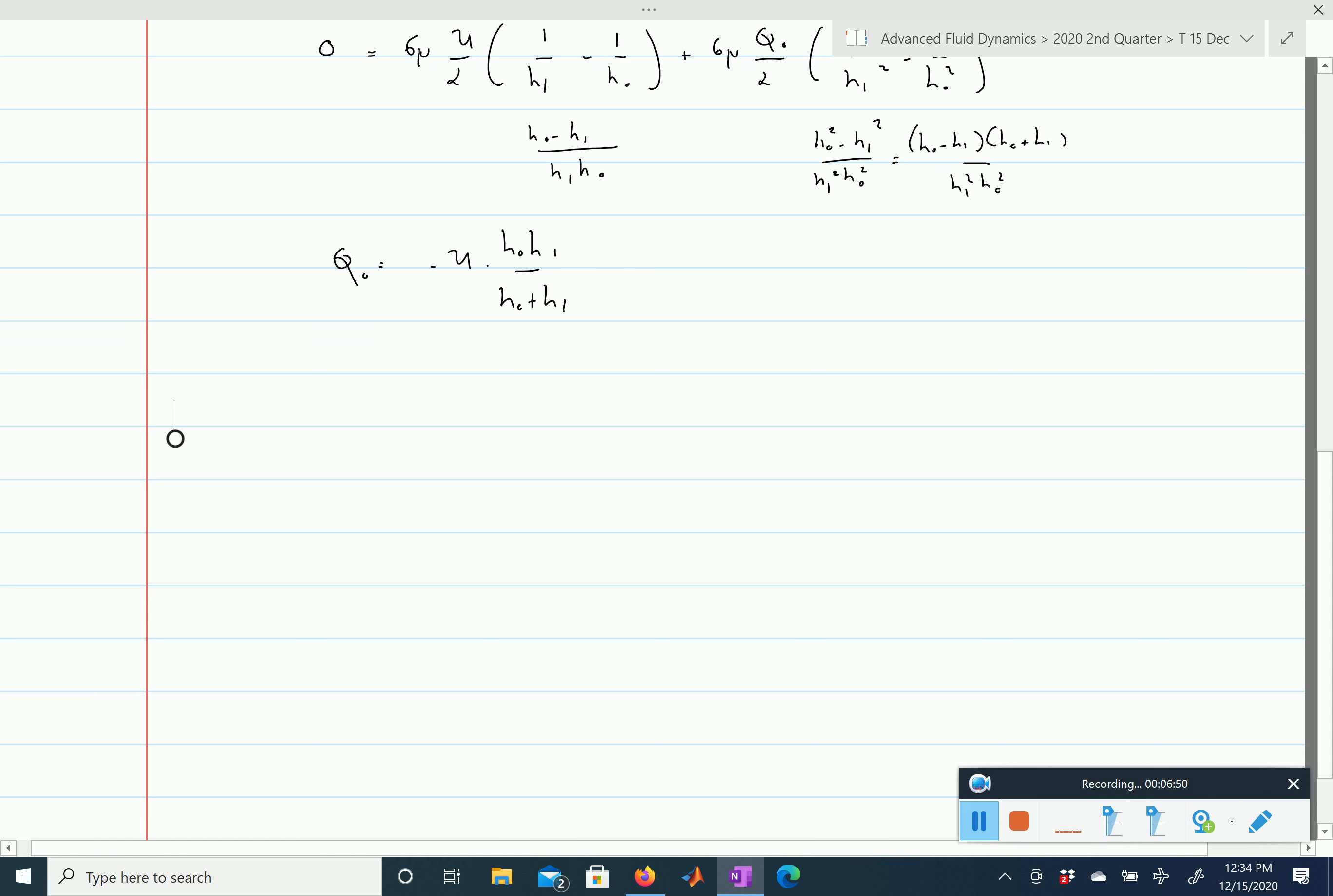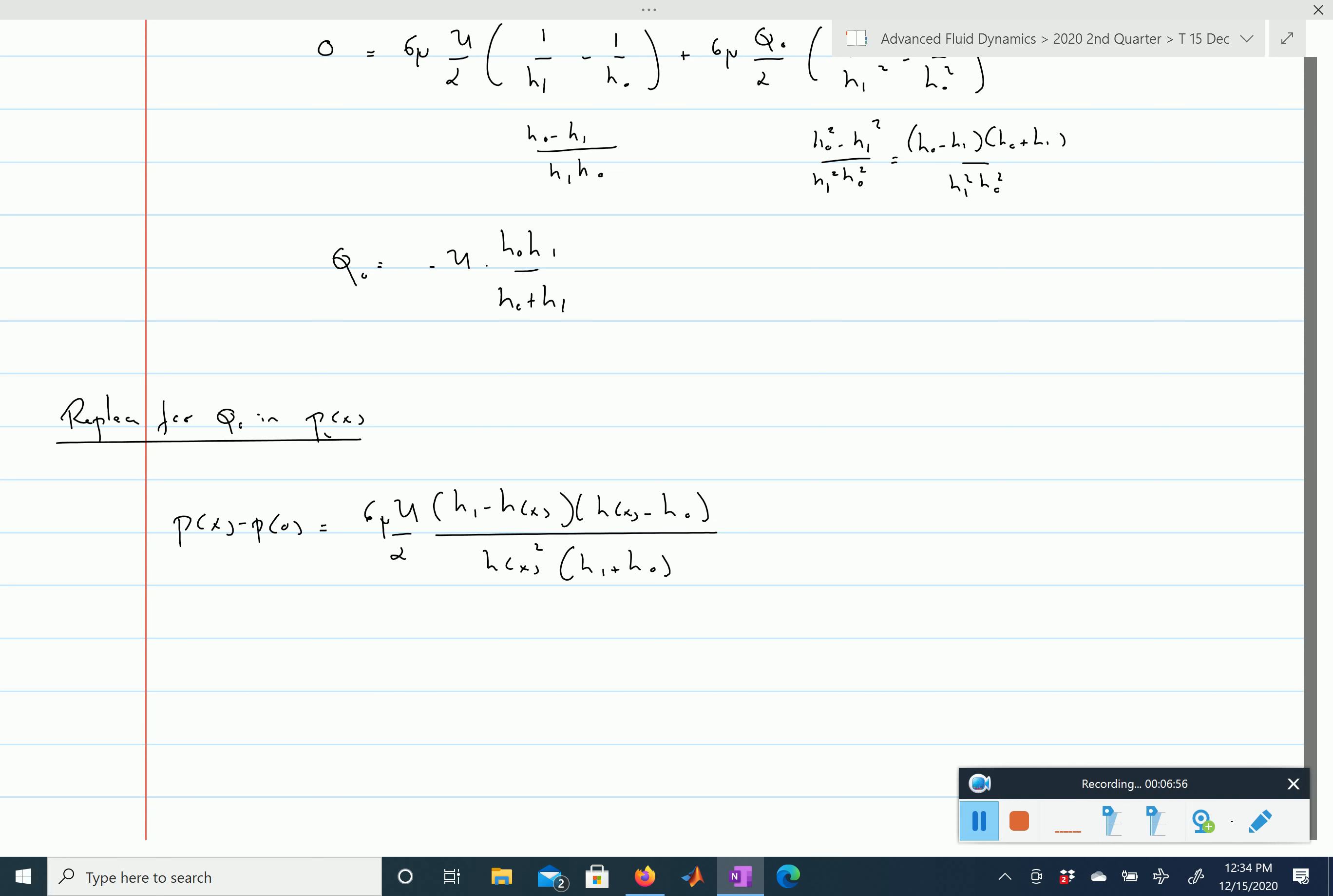So when you substitute for q0 in our expression of the pressure, you will find this expression here. So px minus p0 is equal to 6 mu u divided by alpha. Note these two terms here, h1 minus hx times hx minus h0 divided by hx squared times h1 plus h0, right?